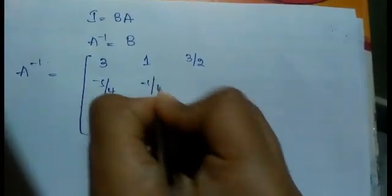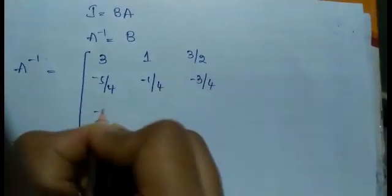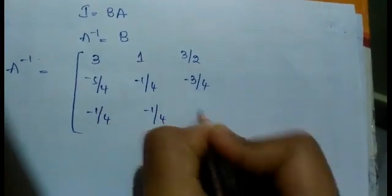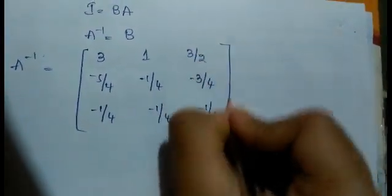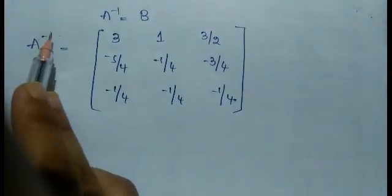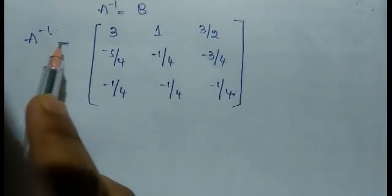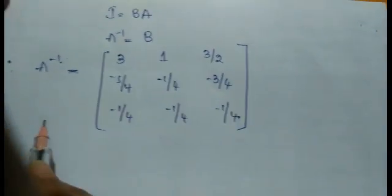Now it is of the form I equals B into A, so A inverse equals B. Therefore A inverse equals [3, 1, 3/2; −5/4, −1/4, −3/4; −1/4, −1/4, −1/4]. This is the resultant inverse matrix. By this method we found the inverse of a matrix using the Gauss Jordan method. Thank you.